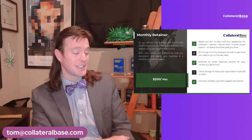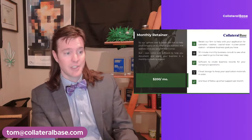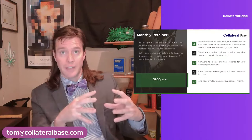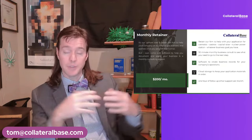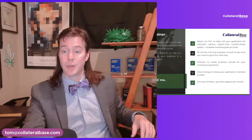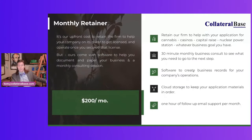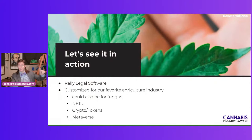That's the upfront retainer to write a very complex application for you in a jurisdiction like Illinois, New York, New Jersey, or Mississippi — which just came online. Having your team's documents in an organized location where you can send e-signatures, and then having somebody who's done it before sit down and talk with you — that's what you get. That's 30 minutes of monthly consultations with a lawyer familiar with the industry, software to create business records, cloud storage to keep application materials in order, and an hour of follow-up email support per month.